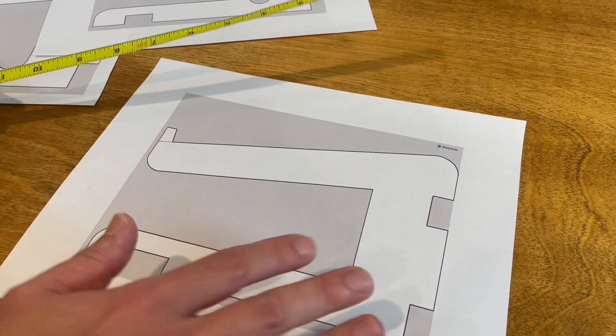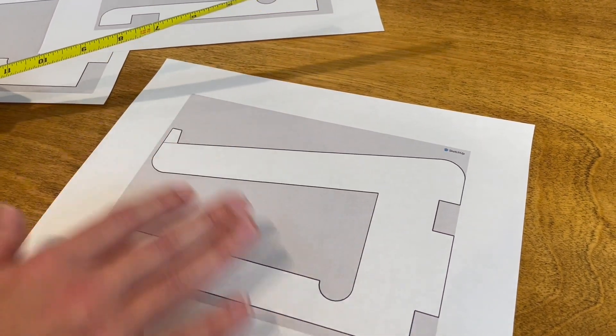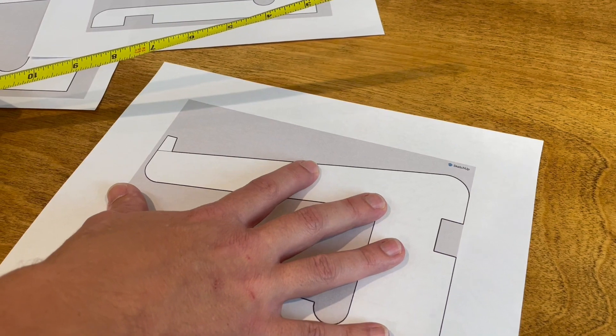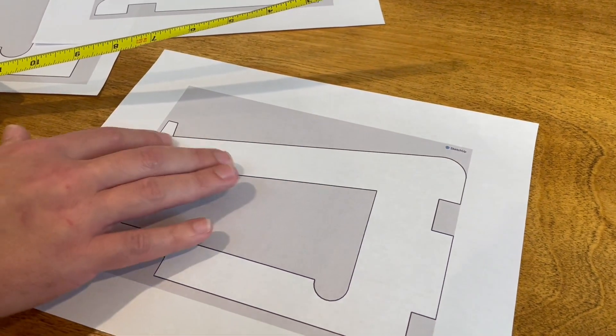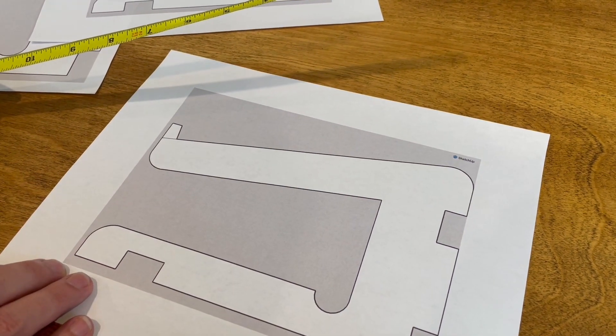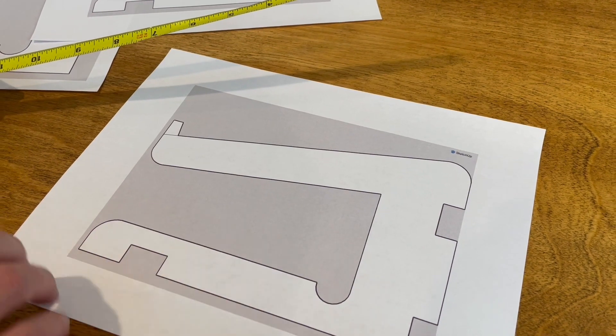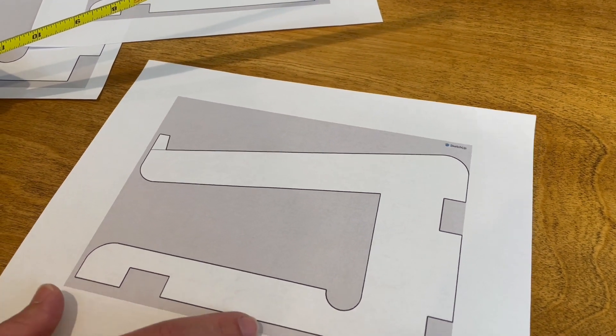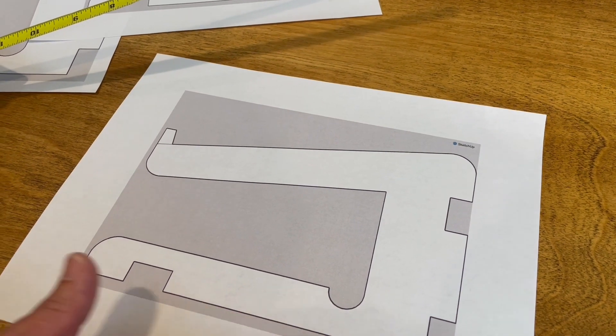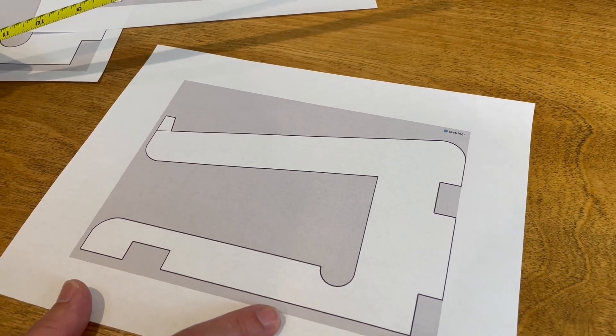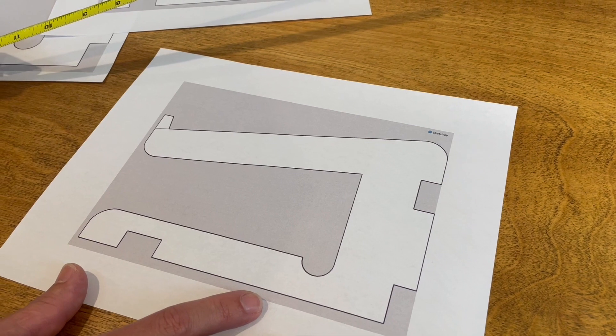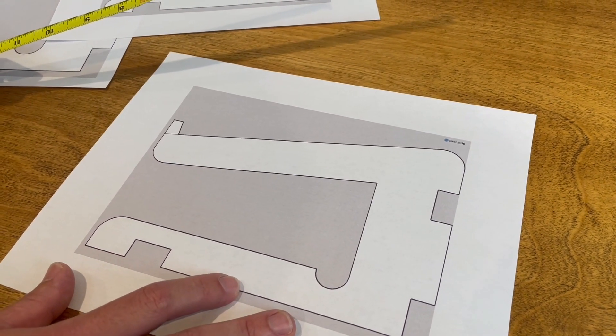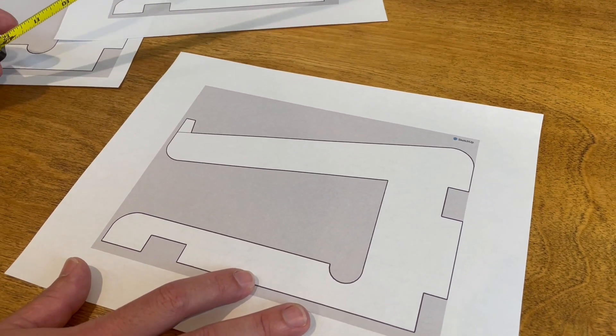Because our whole point in designing it on SketchUp was to print out one-to-one scale, stick it onto a piece of wood, and then just be able to bandsaw it out perfectly with the piece of paper. But it wasn't working out for us, so we had to kind of cut some corners here to get it to work. But, we got it one-to-one scale now, and now we can go put it on some wood. Let's go.